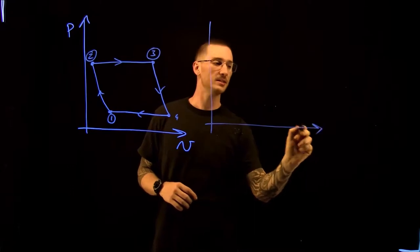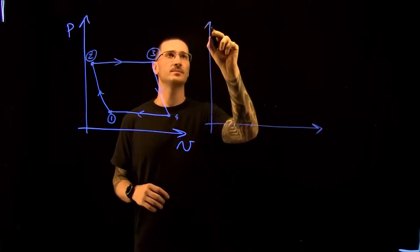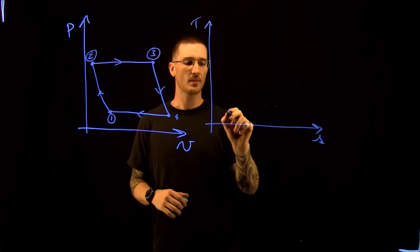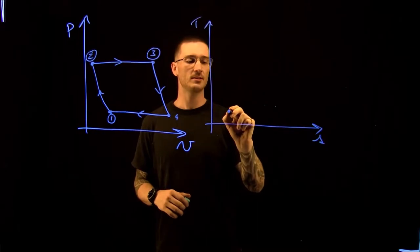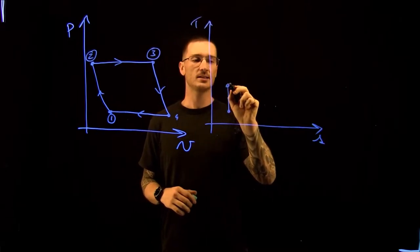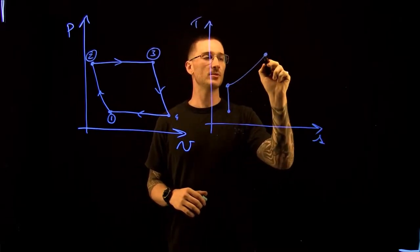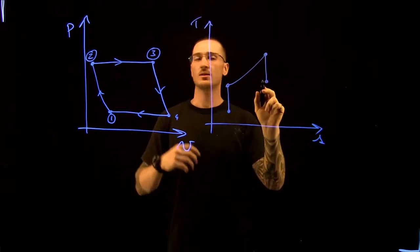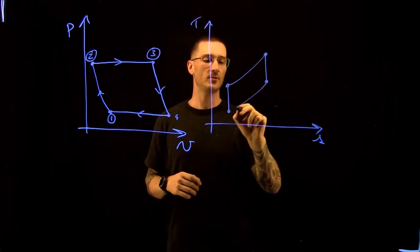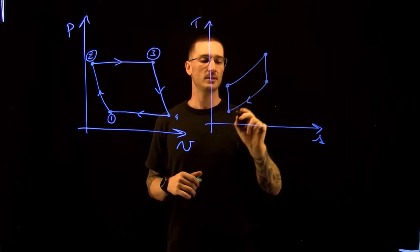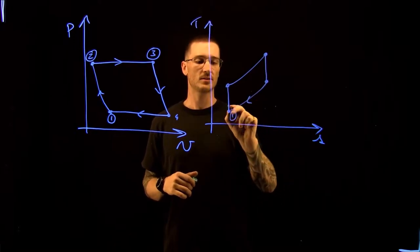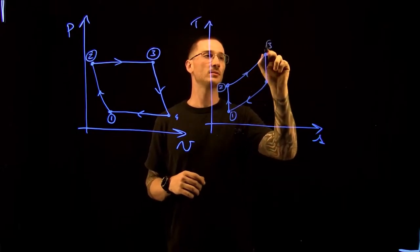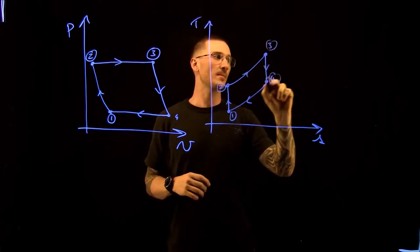On the TS diagram, from 1 to 2 it's isentropic. From 2 to 3 it's constant pressure. From 4 back to 1 is also constant pressure, and from 3 to 4 it's isentropic.